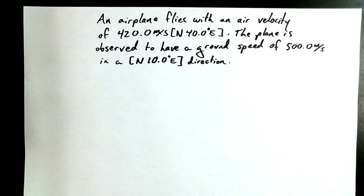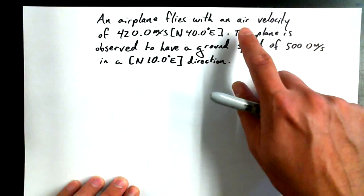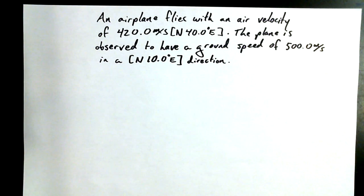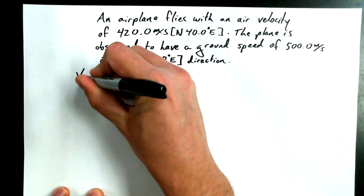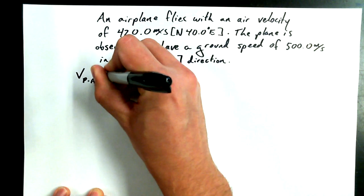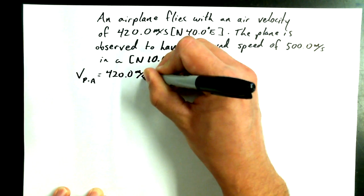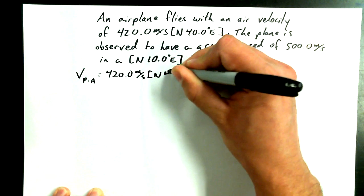I've got an airplane and it's flying with an air velocity of 420 meters per second on a bearing of north 40 degrees east. When I say it has an air velocity, a lot of people say airspeed, but I want to point out air velocity, like airspeed, talks about the motion of an object with respect to the air. So if we know what the air velocity is, then what we're saying is that we know that velocity of the plane relative to the air is equal to 420 meters per second north 40 degrees east.